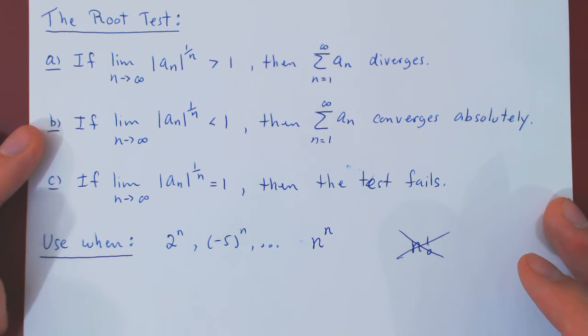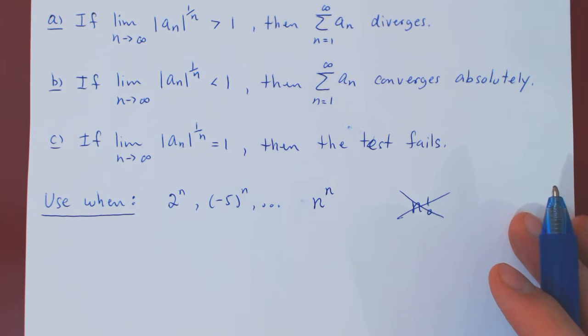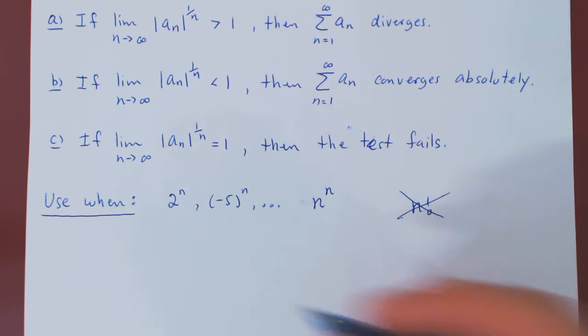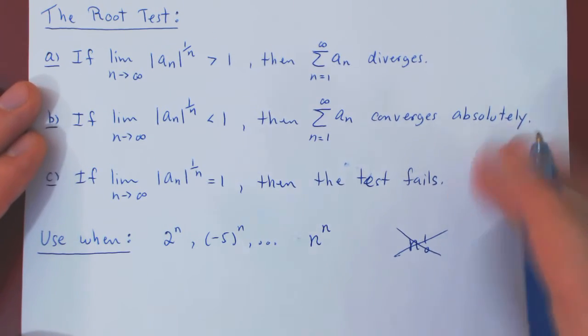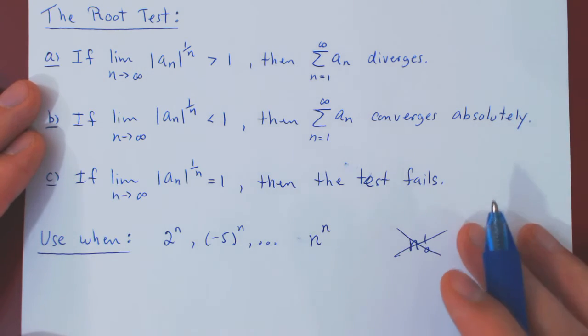And one limit that will crop up quite often in the root test is the following. We have derived this limit in the past, but let's just remind ourselves of what the result is, so that now, if it crops up in the root test, we won't have to re-derive the answer, we'll simply be able to quote it.